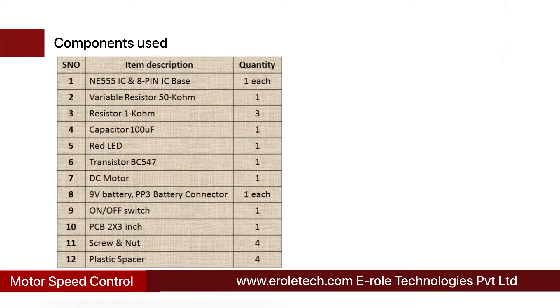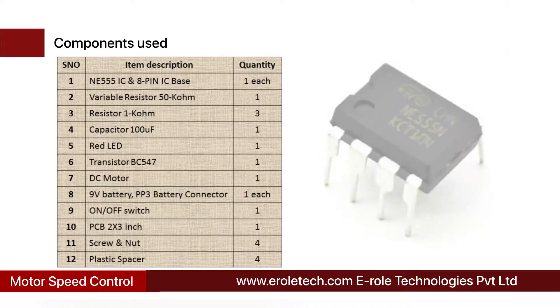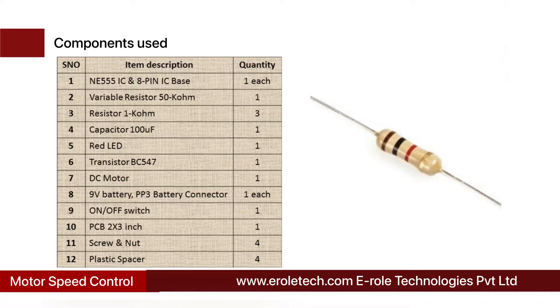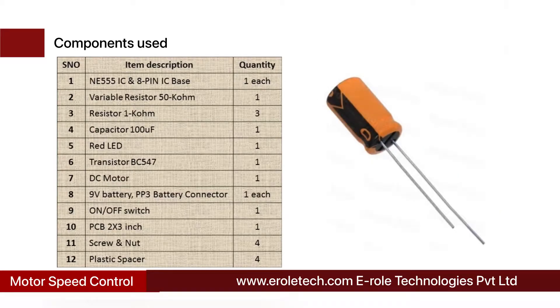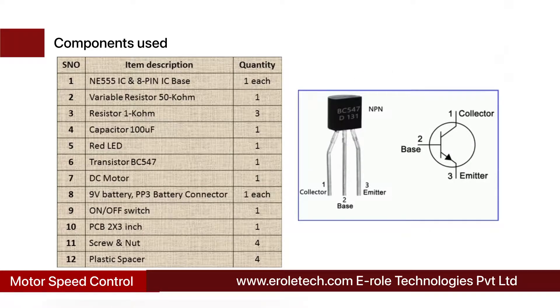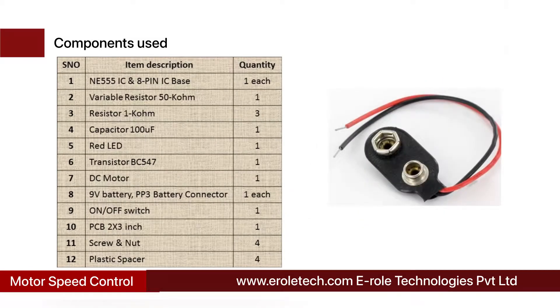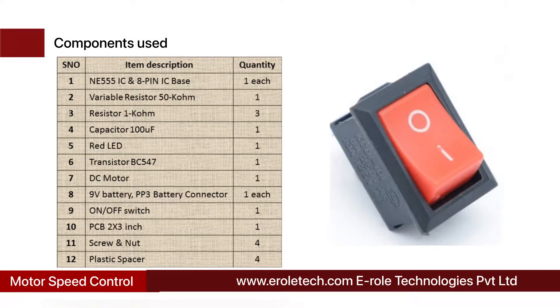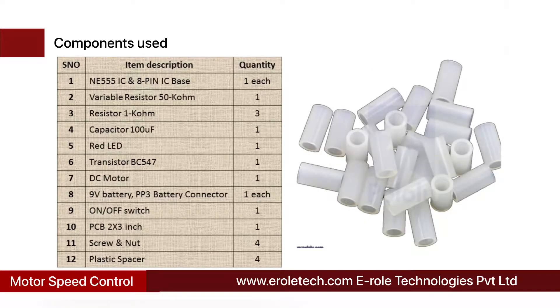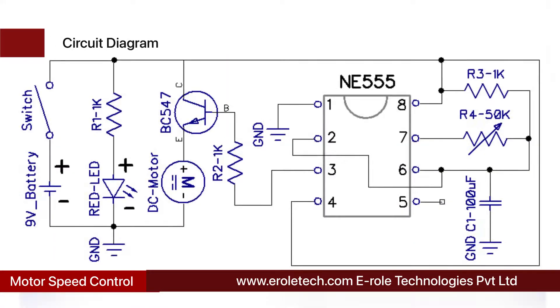These are the components needed in this project: a 555 timer IC, an 8-pin IC base, a 50 kilohm variable resistor, three 1 kilohm resistors, a 100 microfarad electrolytic capacitor, one red LED, one NPN transistor BC547, a DC motor, a 9-volt battery, a PP3 battery connector, an on/off rocker switch, a zero PCB, four screws with nuts, and four plastic spacers.